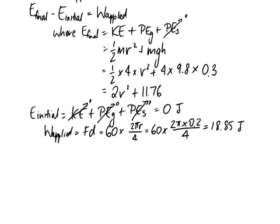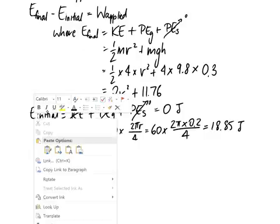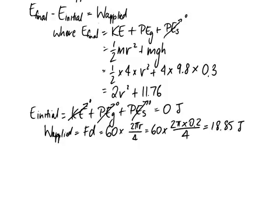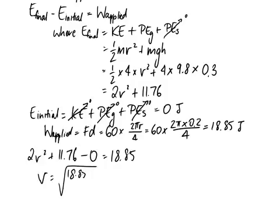The final step of this question is just to substitute the three terms we found out back into our original equation. So the final is 2v squared plus 11.76 minus the initial which we said was zero and it's equal to the work applied which is 18.85. So the only unknown in this equation is the velocity so solving for it you can work it out to be 1.88 meters per second. So that's going to be the velocity that the ball is traveling at the final position when that rod is actually vertical. That's all for that, see you in the next one.